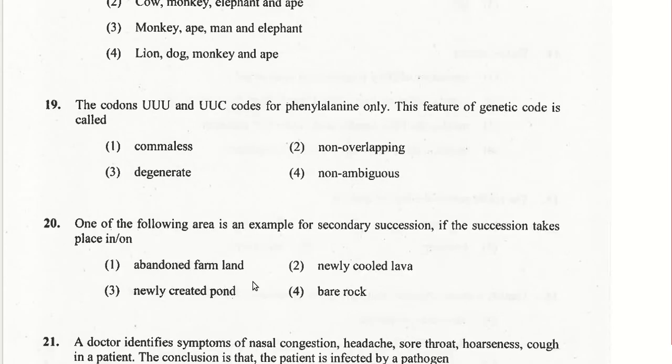An example of secondary succession is an abandoned farmland. Primary succession occurs on bare rock. The answer for question 20 is the first option.